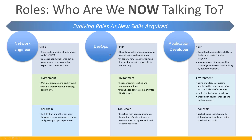And then we have this hybrid role — the DevOps. The skills include deep knowledge of both automation and overall system administration. In general, they may be new to networking and looking for ways to bring skills to networking. Or it could be network engineers that have crossed over into the app dev world with strong understanding of networking. They have experience in scripting and management tools, a strong open source community for DevOps-type automation tools, and a tool chain of scripting with open source tools and shared community through GitHub or other central repositories.